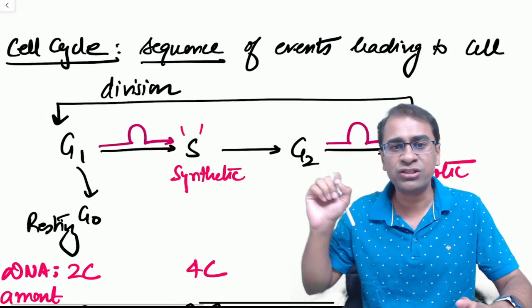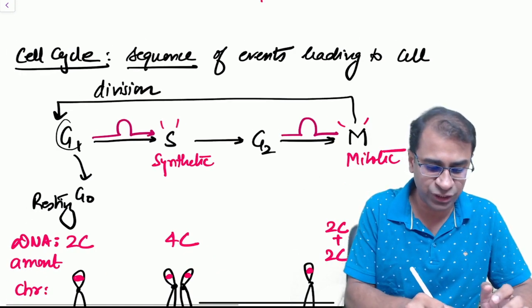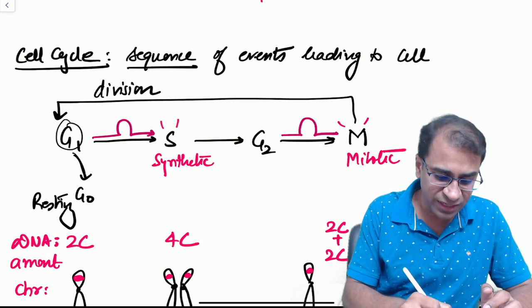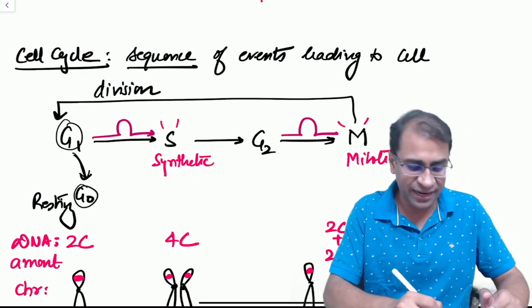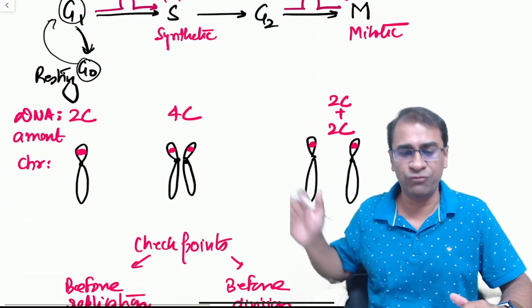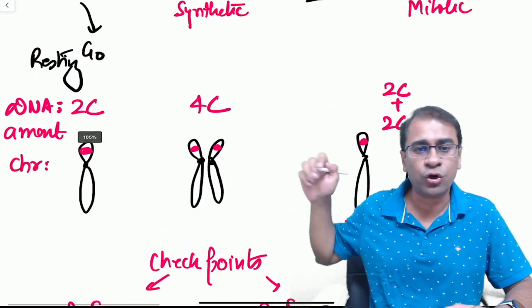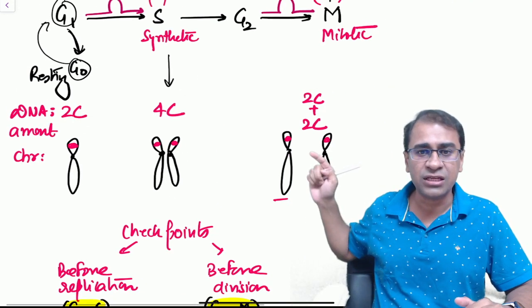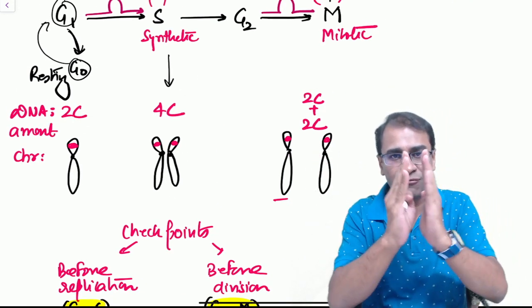Moving on to cell cycle, a very important term. First understand the sequence: G0, then G1, then S, then G2, and M. G1 can go to resting place G0 and can again return back to G1 if required. If you look at a chromosome point of view, at the S phase the chromatid arms will duplicate. At the M phase, the two chromatid arms will separate out, hence M is called the mitotic phase.